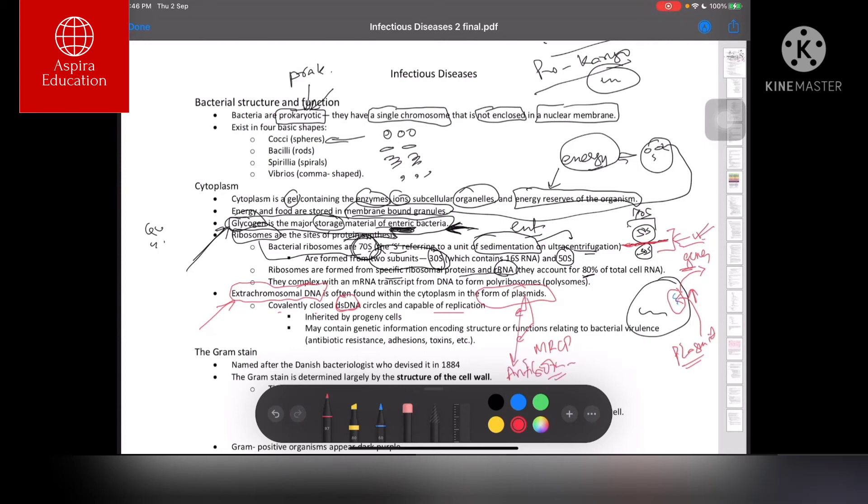They are inherited by progeny cells and may contain genetic information encoding structures or functions relating to bacterial virulence, like antibiotic resistance, adhesins, and toxins.